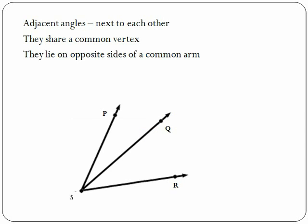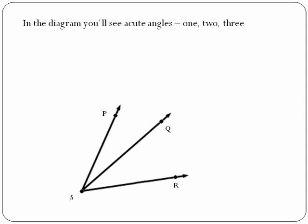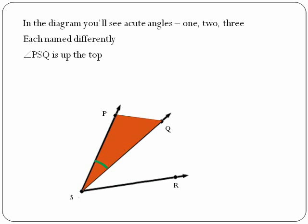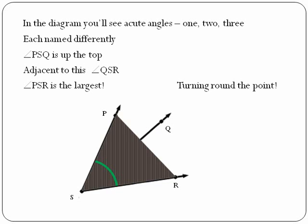Adjacent angles are next to each other. They share a common vertex. They lie on opposite sides of the common arm. In this diagram you'll see the acute angles, one, two, three, each named differently. Angle PSQ is at the top, adjacent to angle QSR. Angle PSR is the largest.